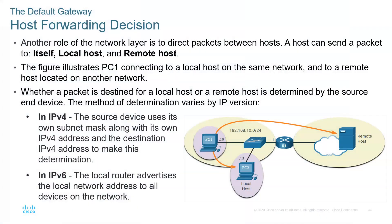The default gateway — which we discussed earlier — is typically the .1 address. So 192.168.10.1 is the gateway. PC at .15 must know its default gateway is 192.168.10.1, and PC1 at .10 must also know its default gateway is 192.168.10.1. Everyone in the LAN that needs to communicate with the outside world must go through the gateway. We call it 'default' because if a device is not communicating with anyone in the LAN, by default it sends traffic there.